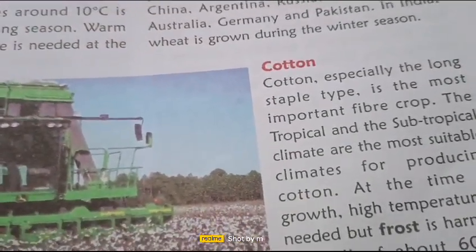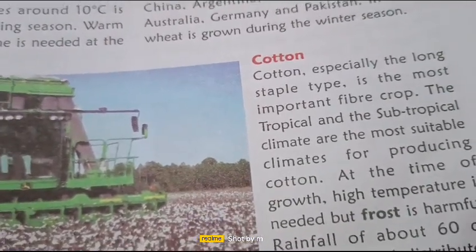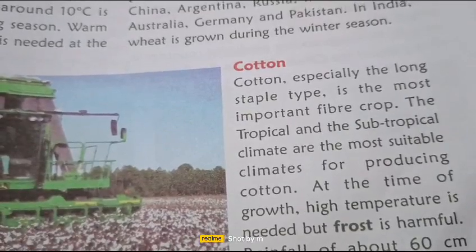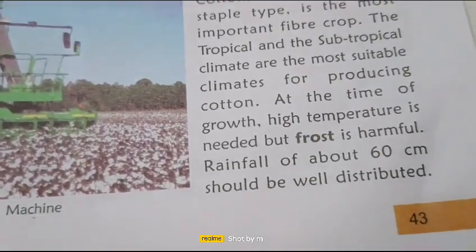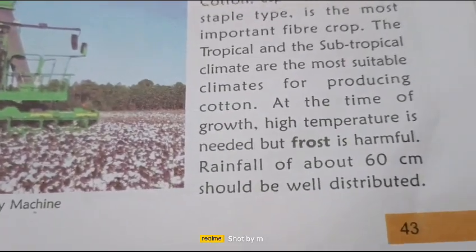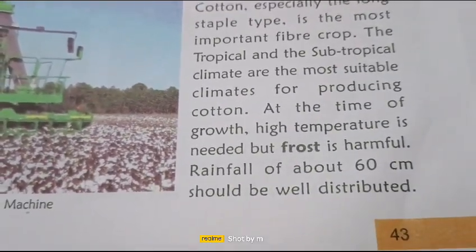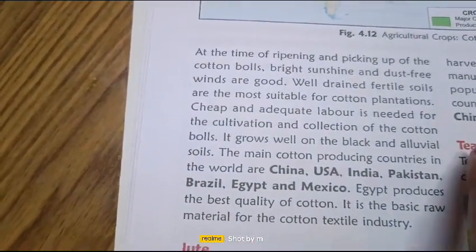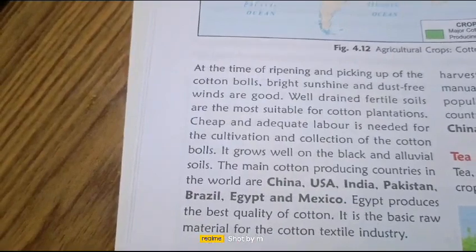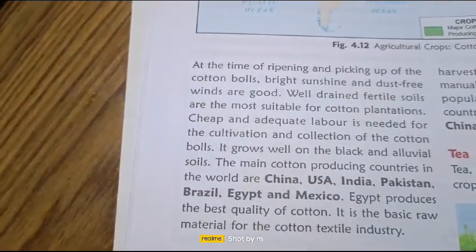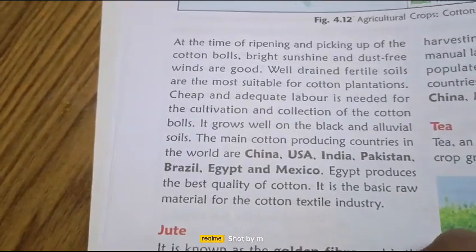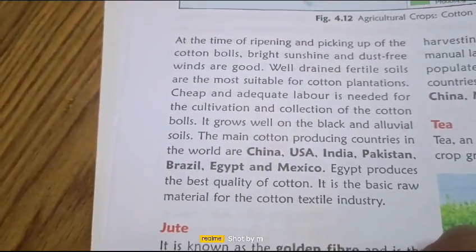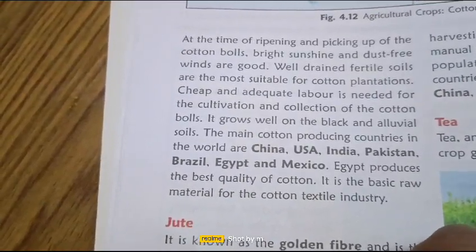Next is cotton, which is a long-staple type of fiber crop. It is grown in tropical and subtropical climates. At the time of its growth, high temperature is needed, but frost is harmful. Rainfall of about 60 cm, well distributed, is needed at the time of ripening and picking of the cotton balls. Good sunshine and dust-free wind is required. Well-drained fertile soils are most suitable for cotton plantations. Cheap and adequate labor is needed for cultivation and collection of the cotton balls. It grows well in black alluvial soil.